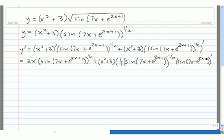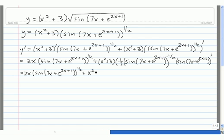In the next step, we'll take care of this derivative. Everything else remains the same — we don't have any primes in any of these other places, so we just carry them through. All of the already-differentiated part is carried forward; now we need to differentiate sine of 7x plus e to the 2x plus 1.